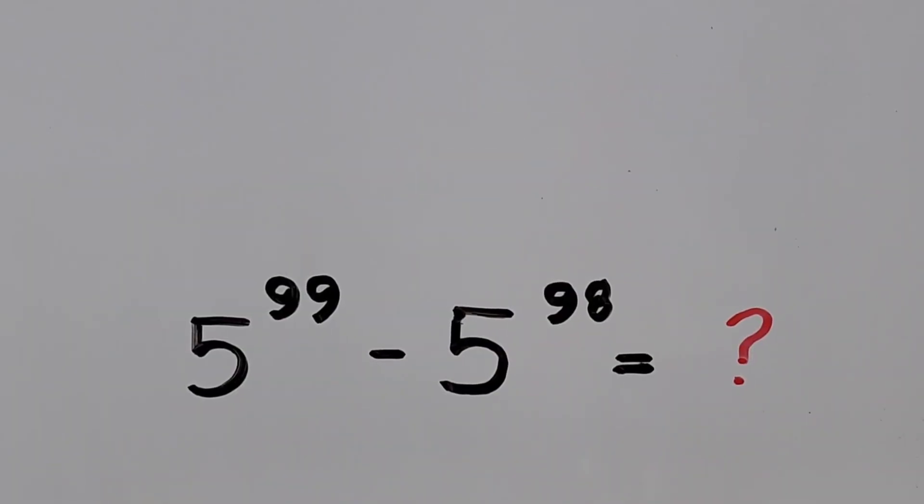Hello everyone, we are here to solve and find the difference of these two numbers expressed in exponential form without using a calculator. 5 to the power of 99 minus 5 to the power of 98 equals what?